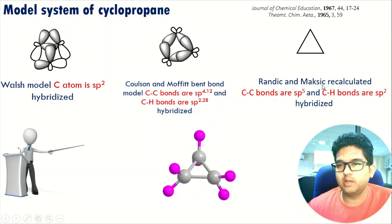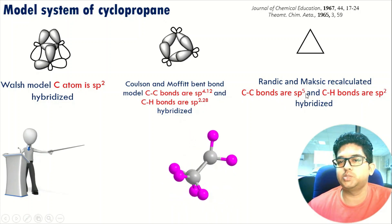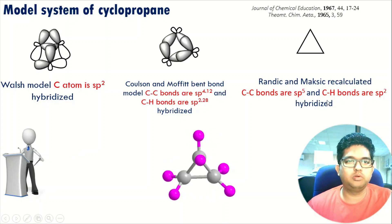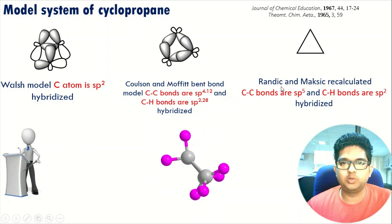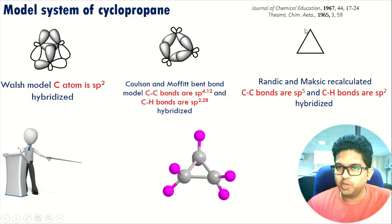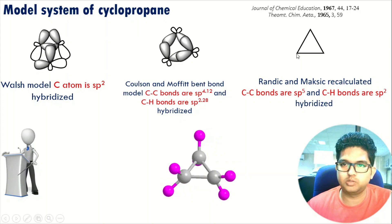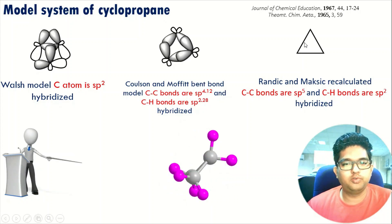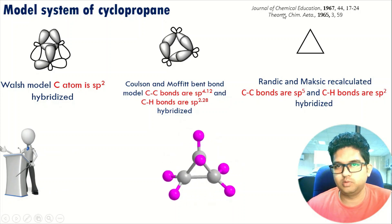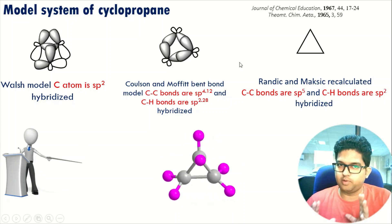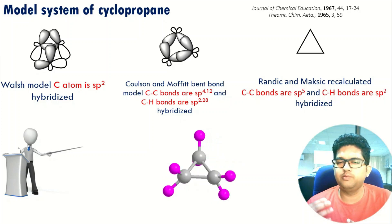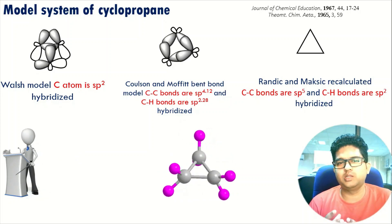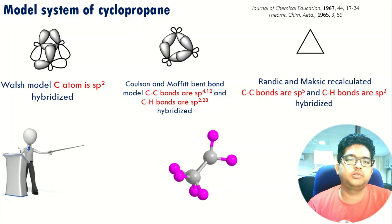Then we have the Randić and Maksić model, which talks about sp5 and sp2 for CH bonds, and the CC bond to be sp5 hybridization. These are the basic chemical bonding models in cyclopropane. To note: all of these models deal only with the endo bonds within the ring, not the exo bonds. If you want more details you can go through the references given. We know carbon has sp2 hybridization based on Walsh, but keeping isovalent hybridization aside for now, as it is not helpful in explaining some of the organic molecules.